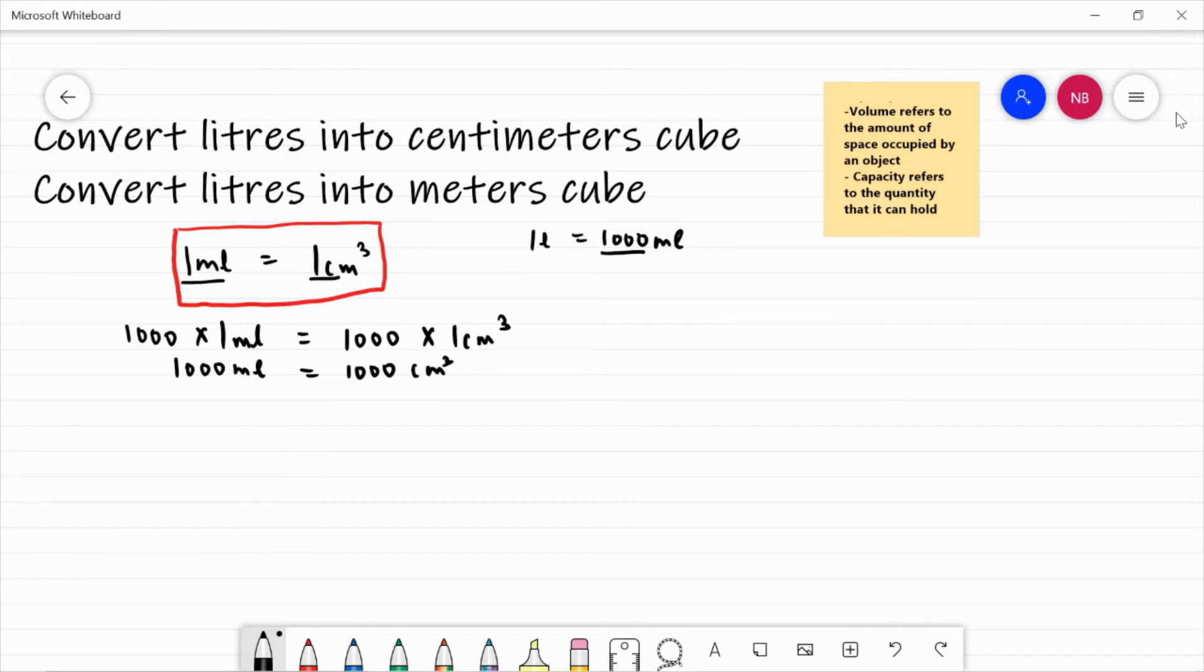If I ask you that how many litres? So I can simply convert this and write this into one litre. We already know this conversion. So one litre is equal to one thousand centimetre cube is enough.